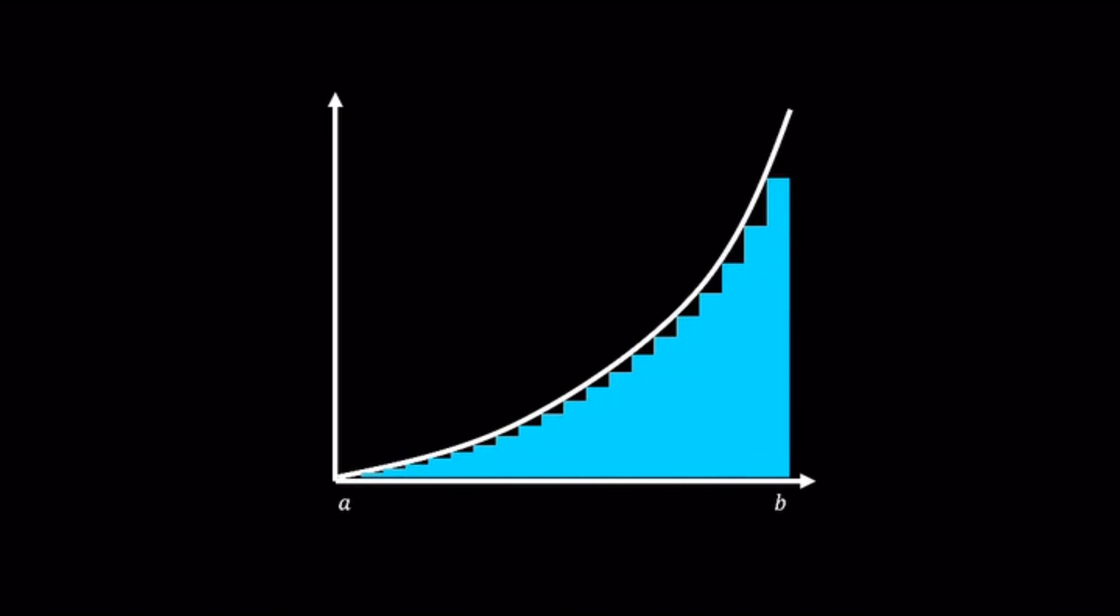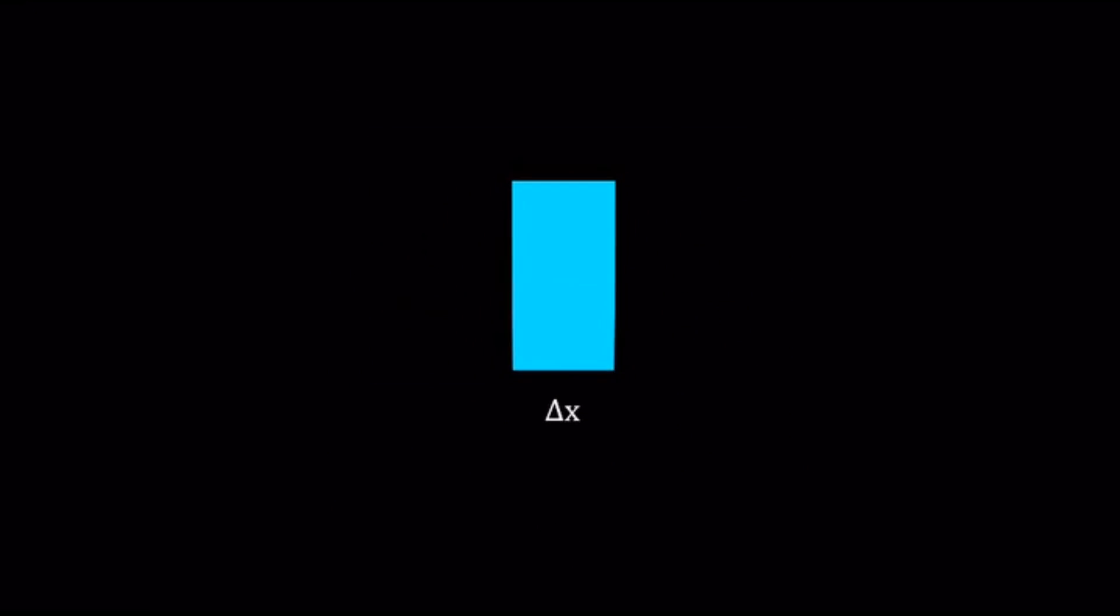Integration asks: what happens when we use infinitely many rectangles, each with an infinitesimally small width, and sum up their areas? In this approximation, the width of each rectangle is a tiny change in x, which we call delta x.